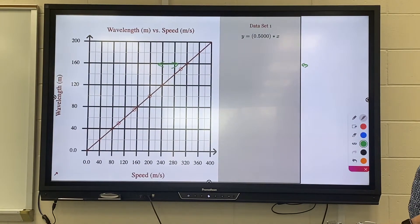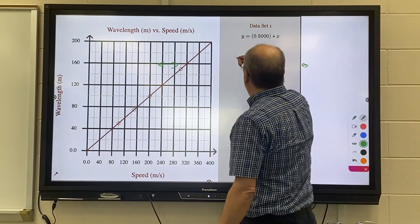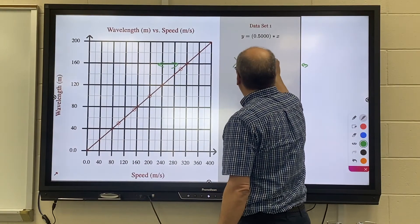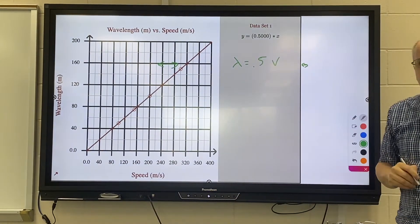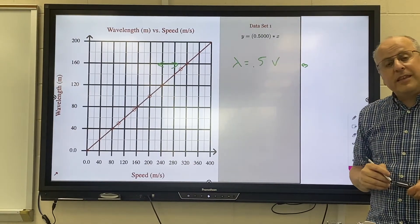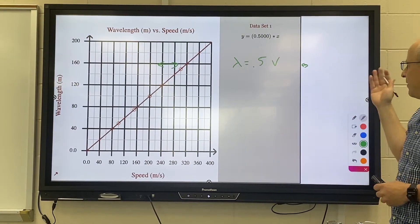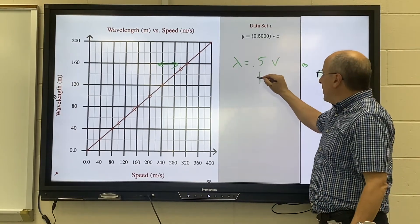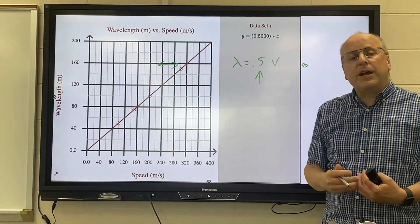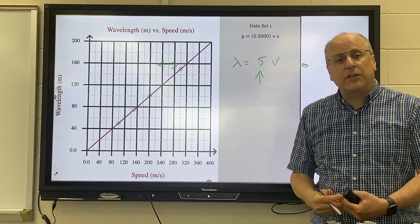When we graph this out we notice that we get a proportional relationship. And this time our wavelength is on the y and our velocity is on the x. Again we get a graph constant and this graph constant this time depends on the frequency.